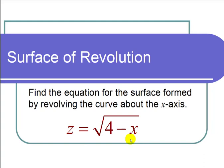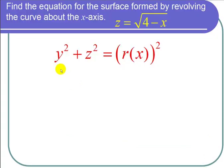First let's recall the formula for the equation of the surface of revolution about the x-axis. That's y squared plus z squared equals r of x quantity squared, where r of x is the right hand side of the equation. This is true because the cross sections in the yz plane will be circles and the radii of the circles will be the right hand side of the equation, r of x.